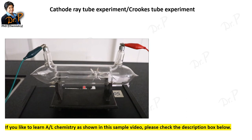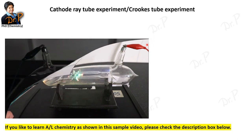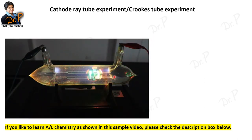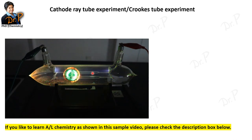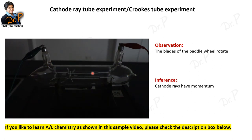In a slightly different cathode ray tube containing a paddle wheel, when voltage is supplied and cathode rays are emitted, the paddle wheel rotates. We can switch the cathode and anode positions and observe the wheel responds accordingly. The observation is that the blades of the paddle wheel rotate, and we can conclude that cathode rays have momentum — they are composed of particles that have mass and kinetic energy.